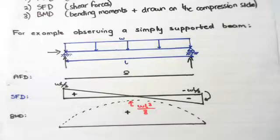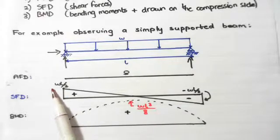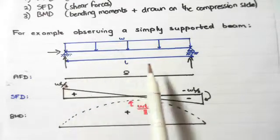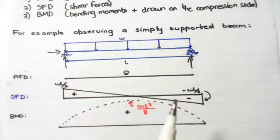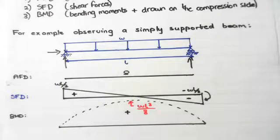The shear force diagram looks something like this: we have a shear force of positive WL/2 at one end, where W is the loading distribution function times L the span divided by two, and at the other end we have a negative shear force of minus WL/2. This is the final result — I'm just showing you what a typical axial force, shear force, and bending moment diagram can look like.